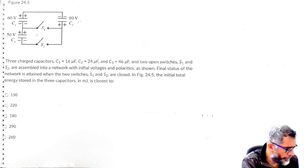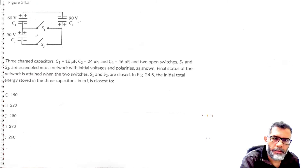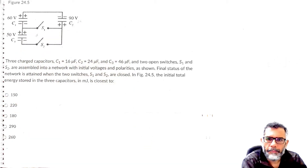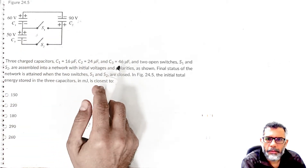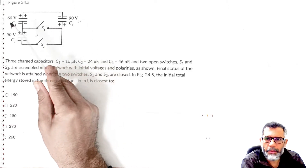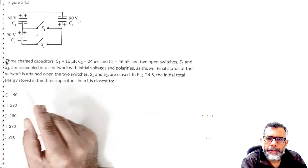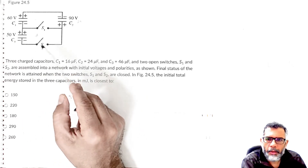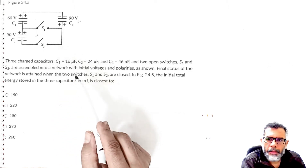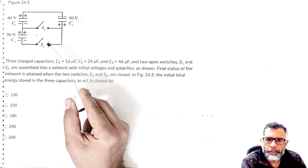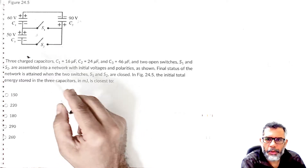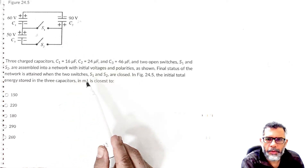In this example problem, for three capacitors which are connected in this diagram wiring, the capacitances are given and they are initially charged under these potential differences shown on the picture. There are also two switches which are initially open. With this configuration, the problem is first asking: what is the total energy stored in this system in units of millijoules?